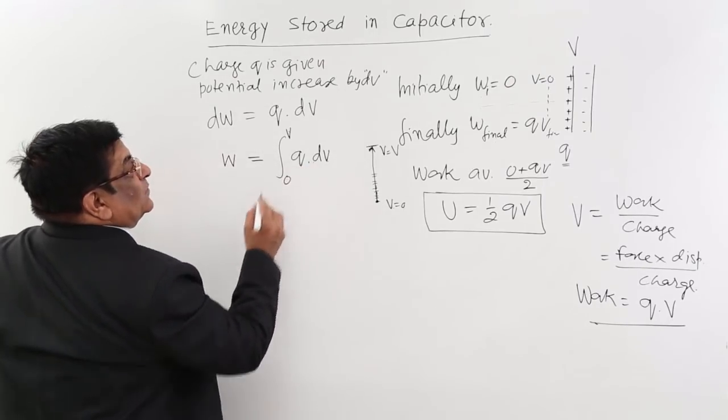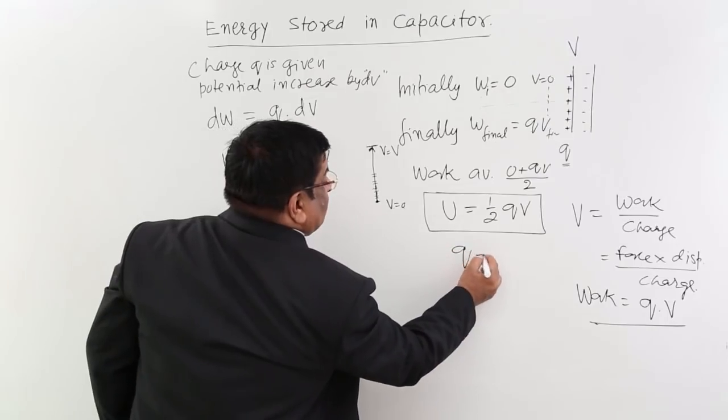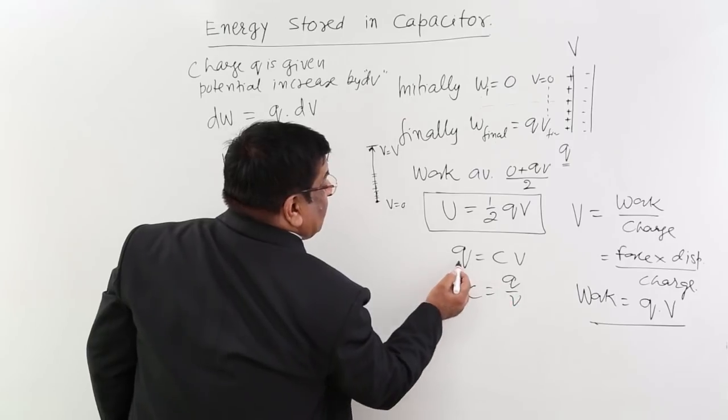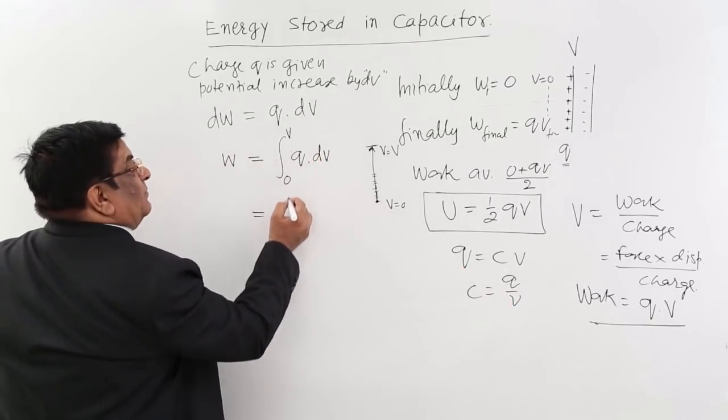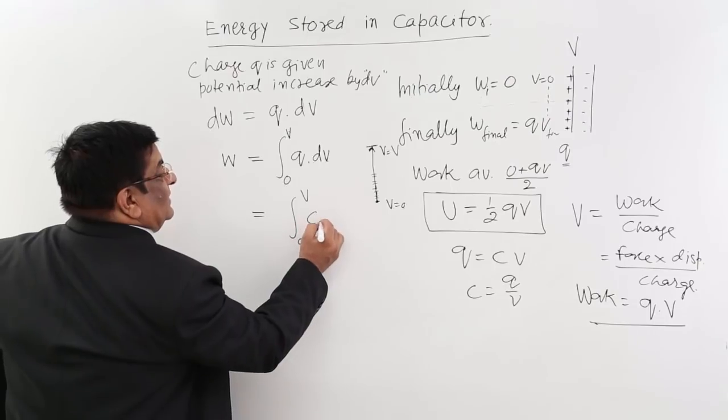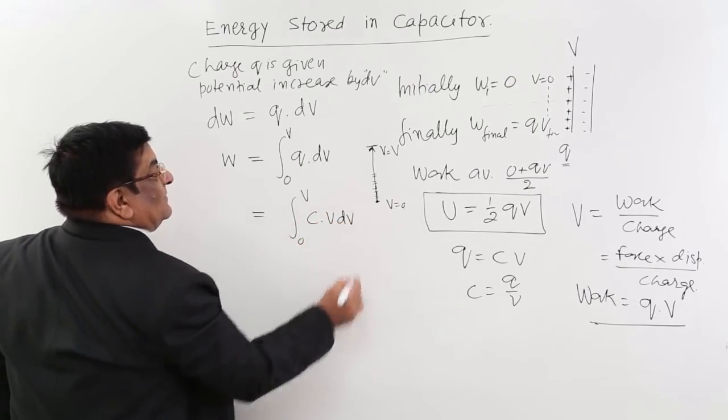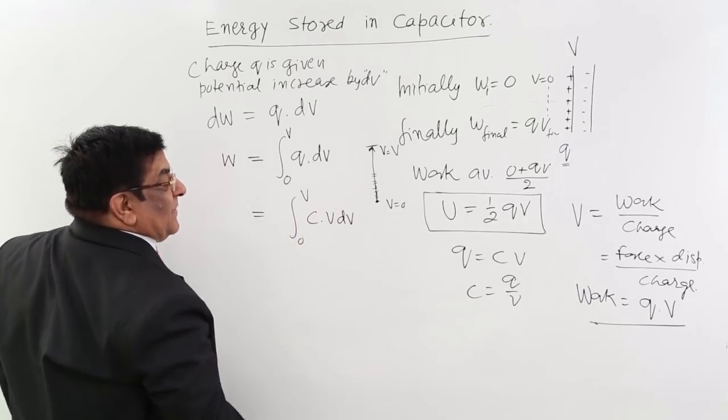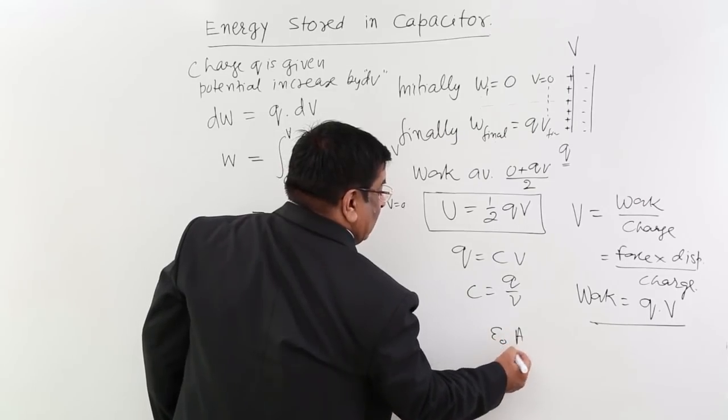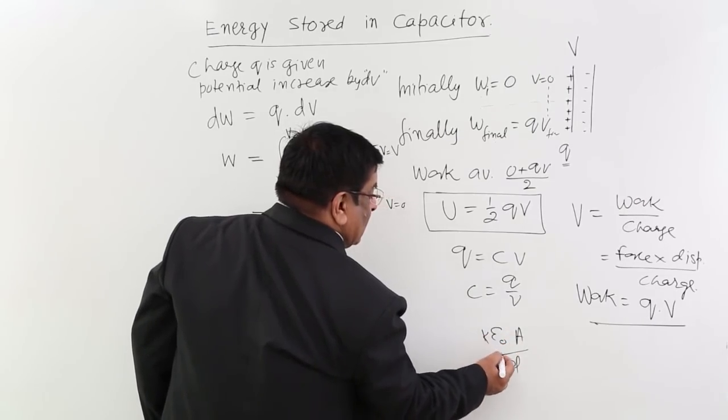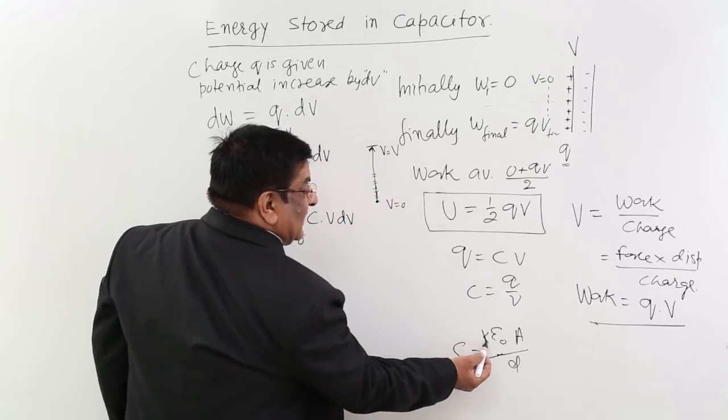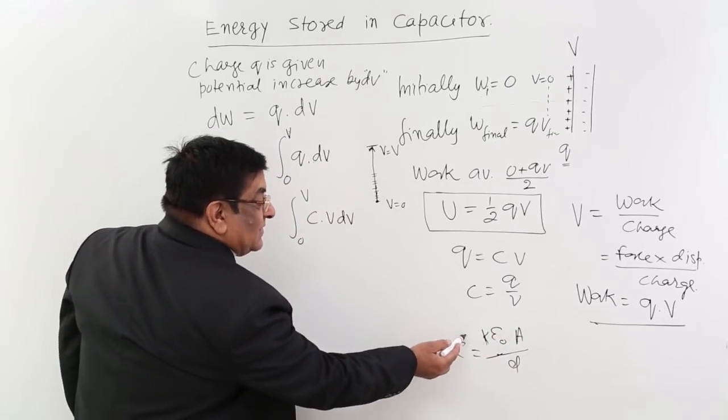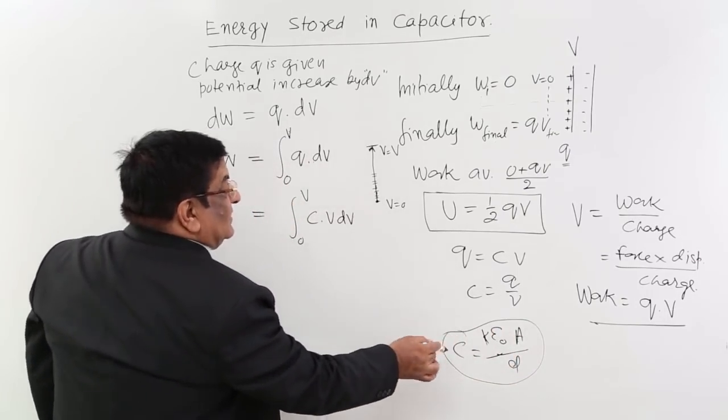Now this Q, we know by the formula Q equals C into V, C equals Q upon V. From this we get Q equals CV. So I put it as 0 to V, CV DV. Now C is capacitance which depends upon K Epsilon 0 A upon D. During this charging process, neither K change nor Epsilon change nor A change nor D is changing. So this remains a constant. C remains a constant.